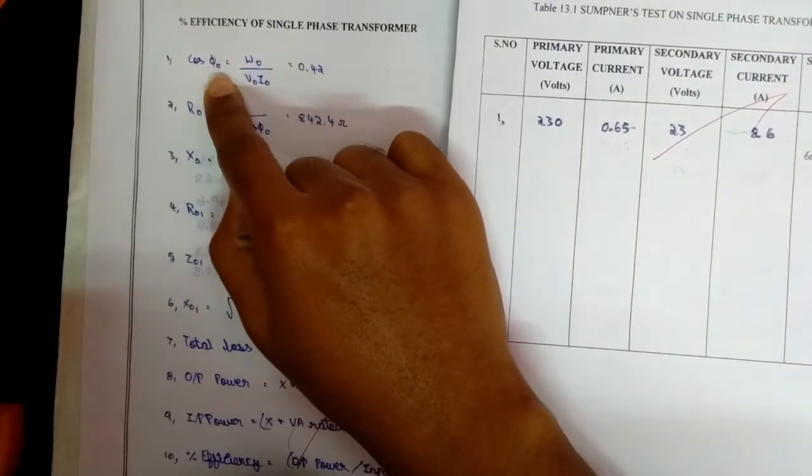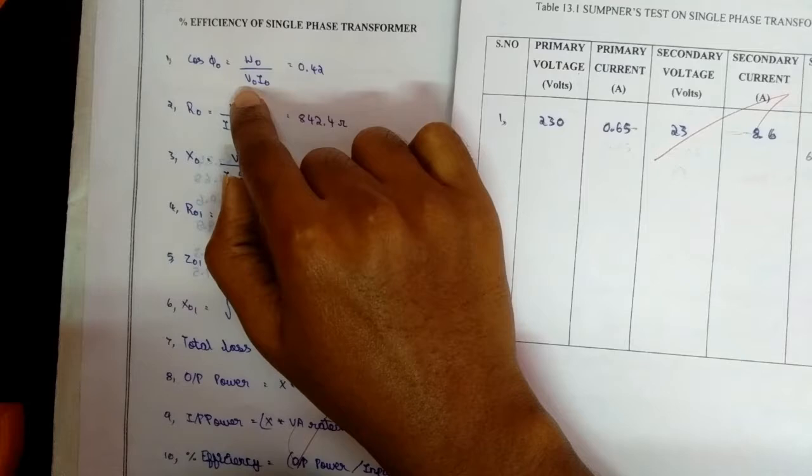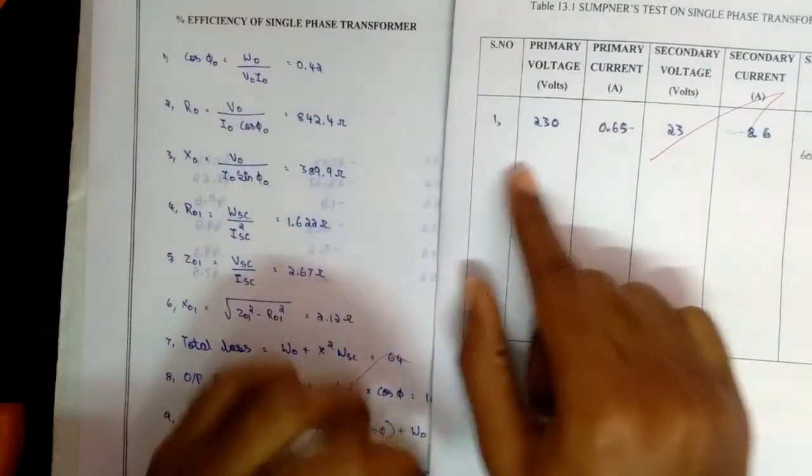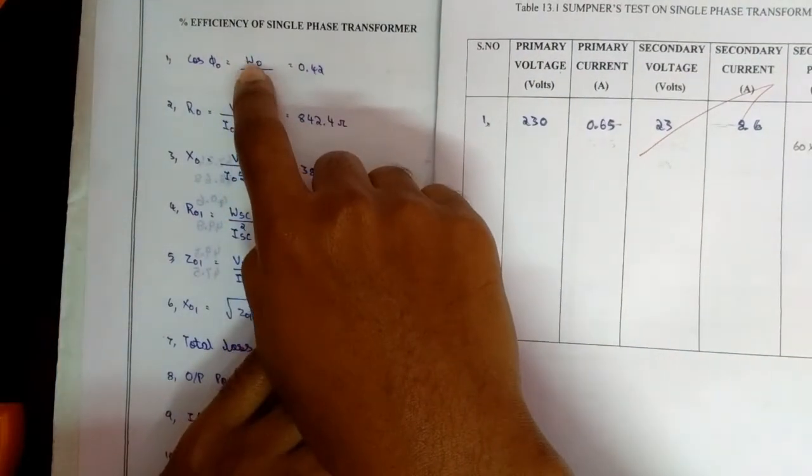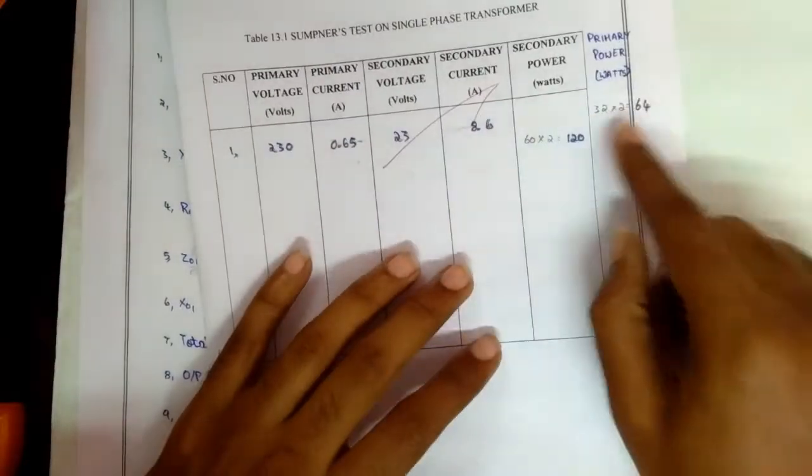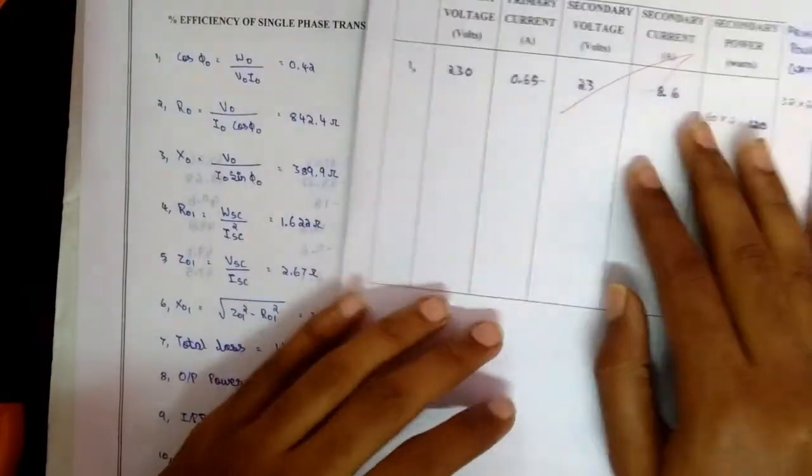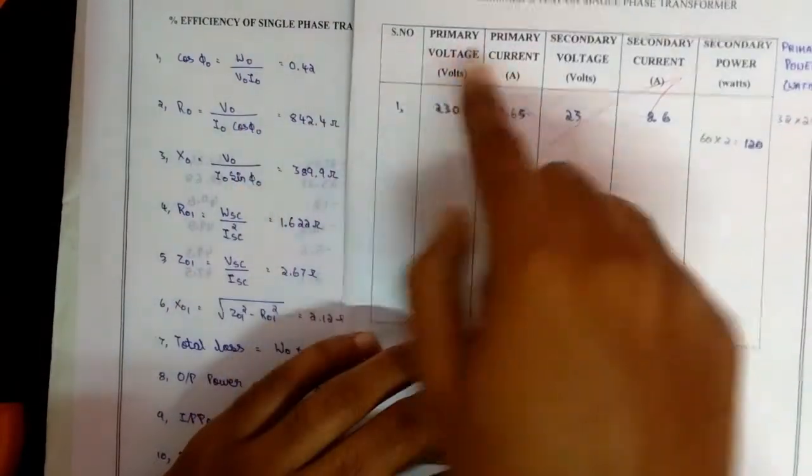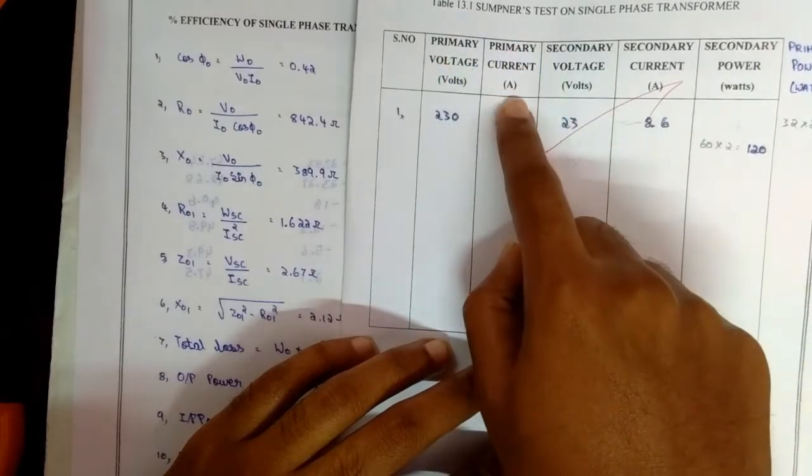For cos φ, the formula will be W₀ by V₀ into I₀. W₀ is the primary power, W₀ is 64, and V₀ I₀ is the primary voltage and primary current.